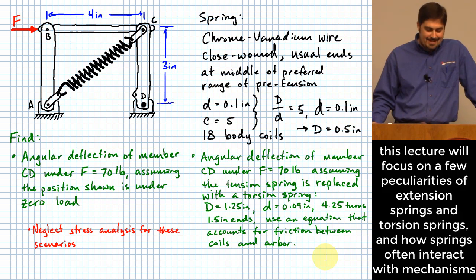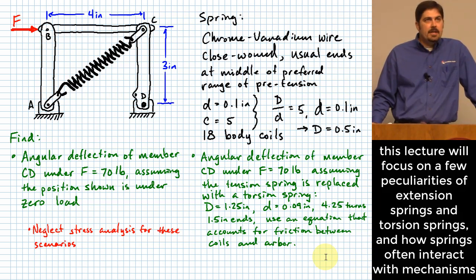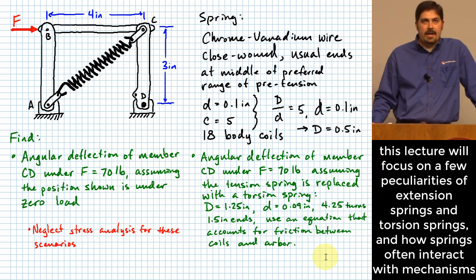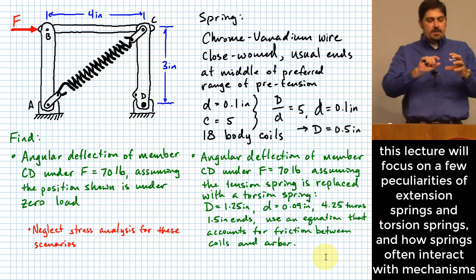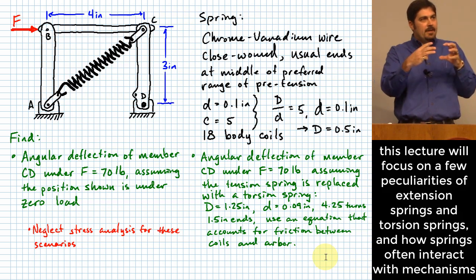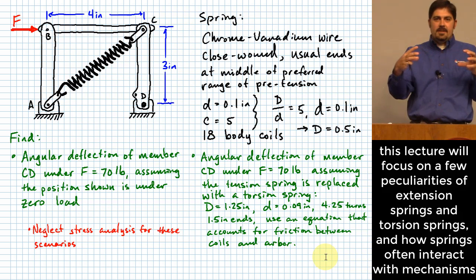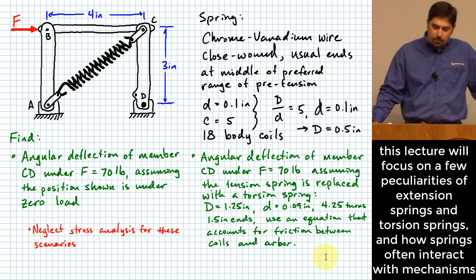One type is called an extension spring. Extension springs carry tension rather than compression, and they have little hooked ends so they can apply tensile forces. Another difference is that they can carry a pre-tension. When the spring is wound around the mandrel, the wire is twisted slightly during winding, making the spring want to be shorter than it can be — the coils prevent that, creating a pre-tension in the spring.